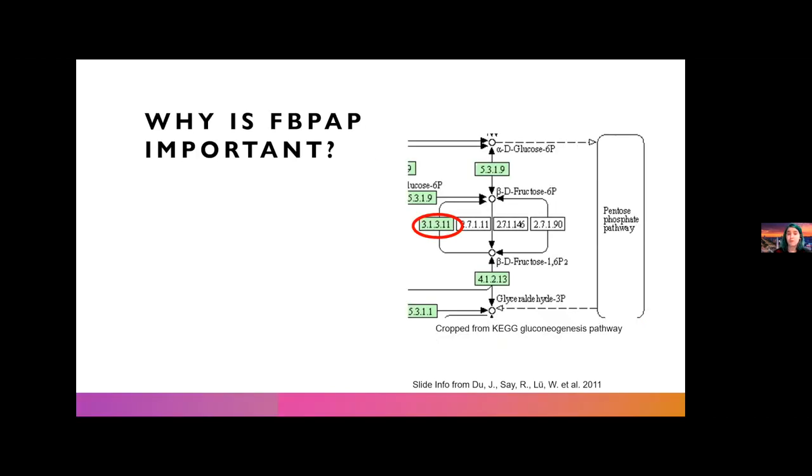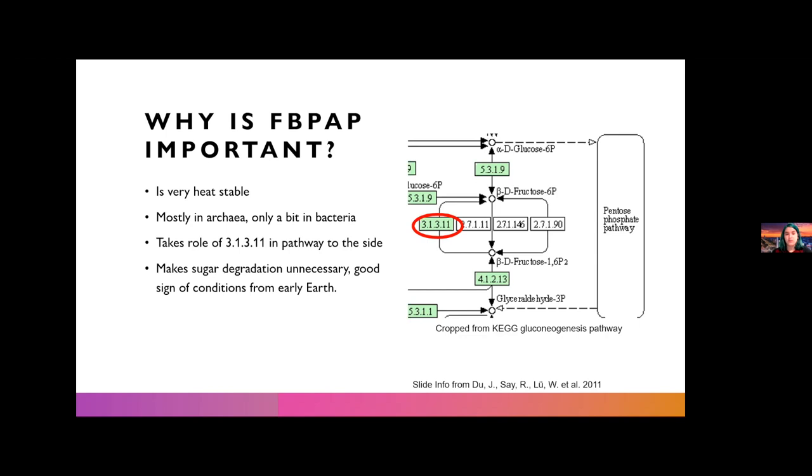Going into a bit more about why it's important. For one thing, it's very heat stable, which I think would make it a very good candidate for early life carbon fixation, because as we already mentioned, early Earth had very high temperatures. So any enzymes that early life may have had would have to be able to survive high temperatures instead of unraveling or denaturing, as many proteins that we know now do. Interestingly, it's mostly in archaea and only a bit in bacteria. And it takes the role of 3.1.3.11 in the pathway to the right, which you will see here is the gluconeogenesis pathway. It makes sugar degradation unnecessary, which is really good for conditions from early Earth, because in an environment where there weren't many sugars, it would be important to be able to keep the ones that you already had, at least for as long as you can.